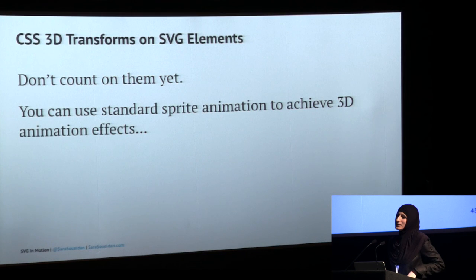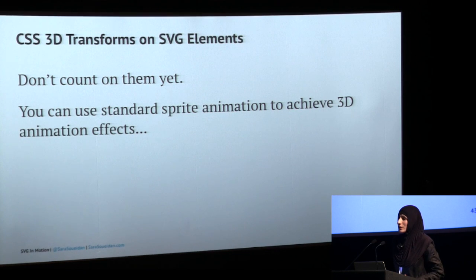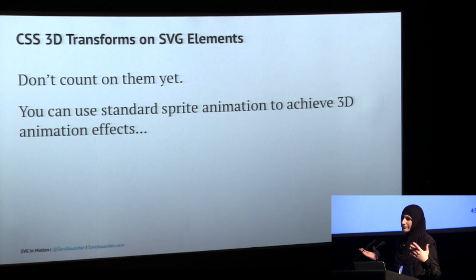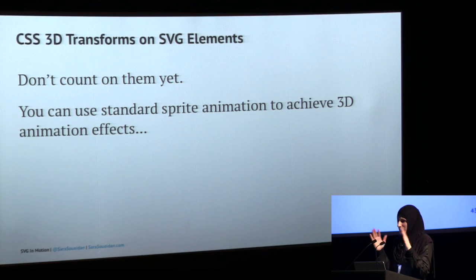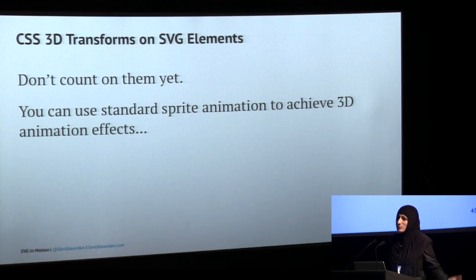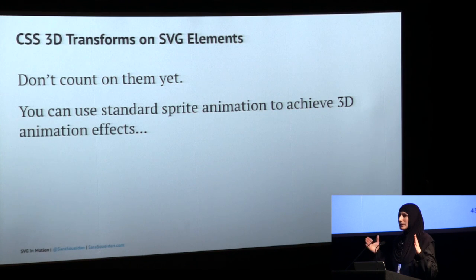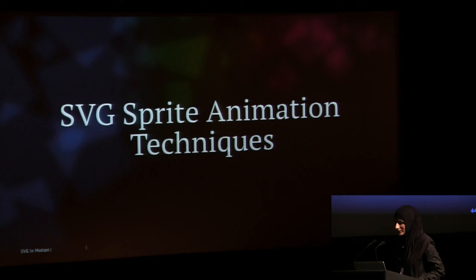CSS 3D transforms on SVG elements — don't count on them yet. Firefox is the only browser that supports CSS 3D transforms on SVG elements. Chrome does it but flattens the perspective, so it's not really 3D. For example, I had a client who wanted a simple butterfly flutter effect — a simple 3D rotation — but it's not supported via CSS on SVG. You can achieve 3D effects using sprite animation instead. There are three different ways to use sprite animations in SVG.